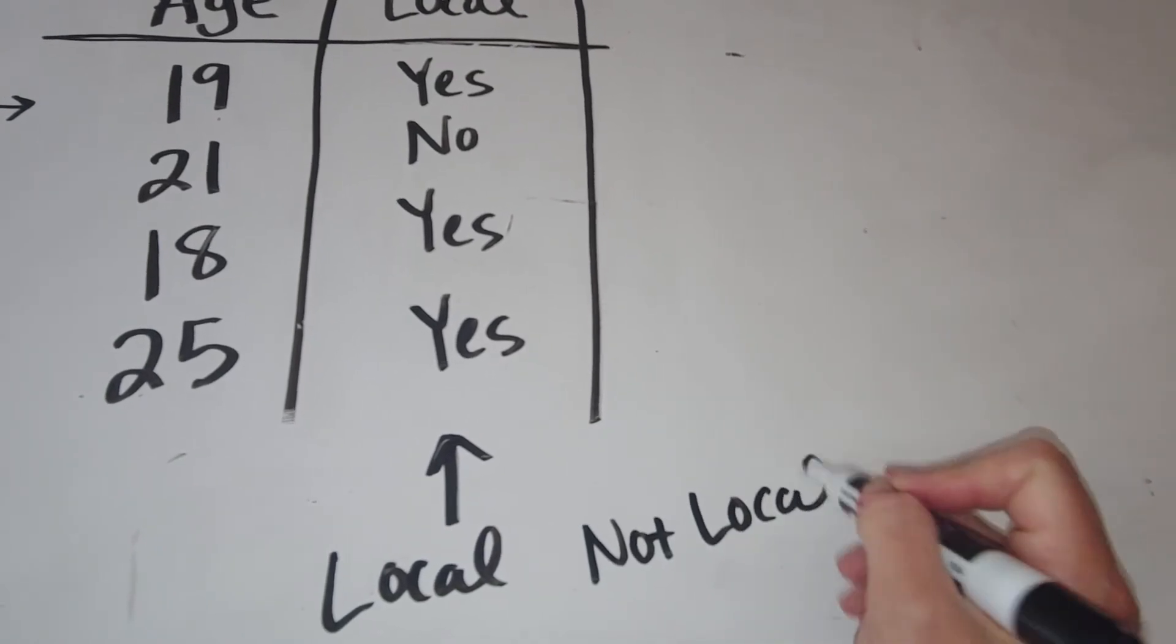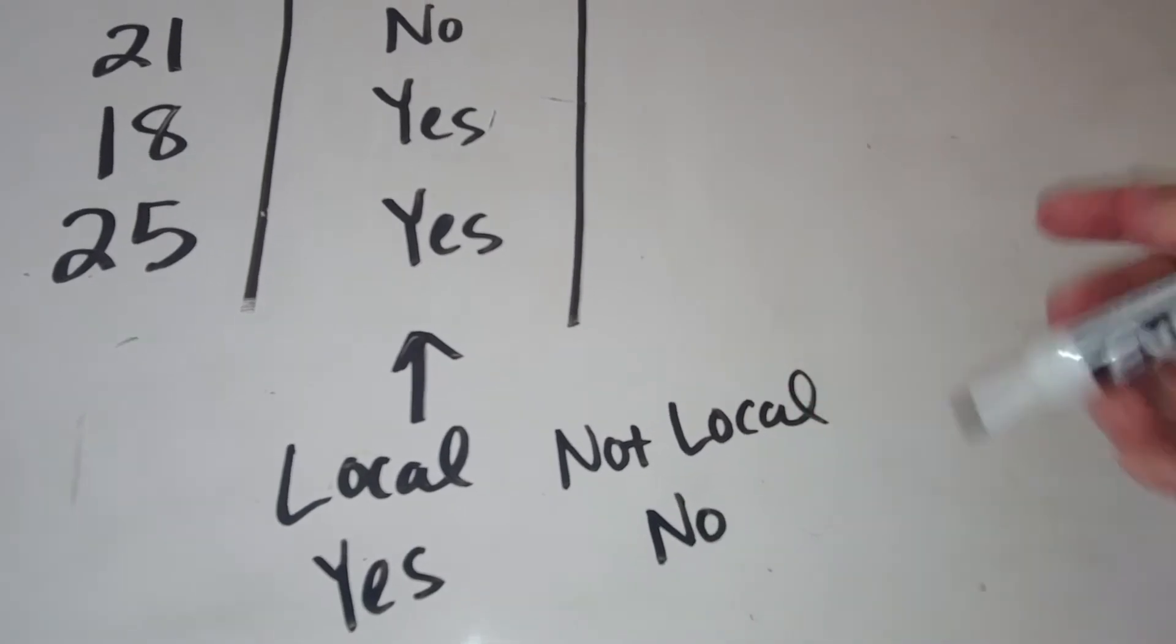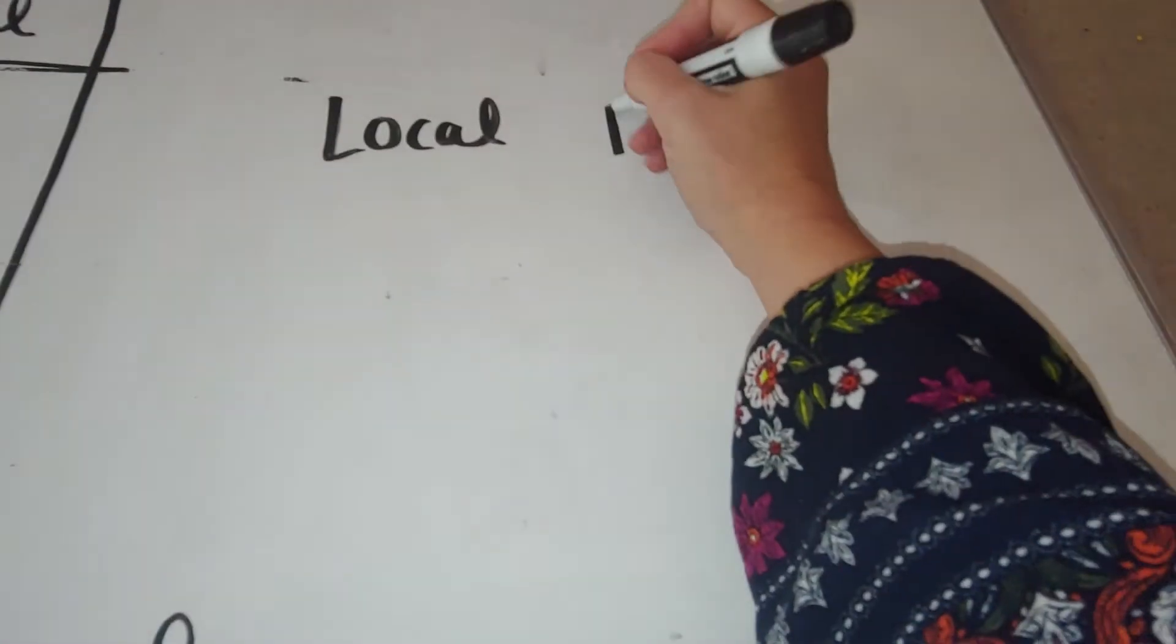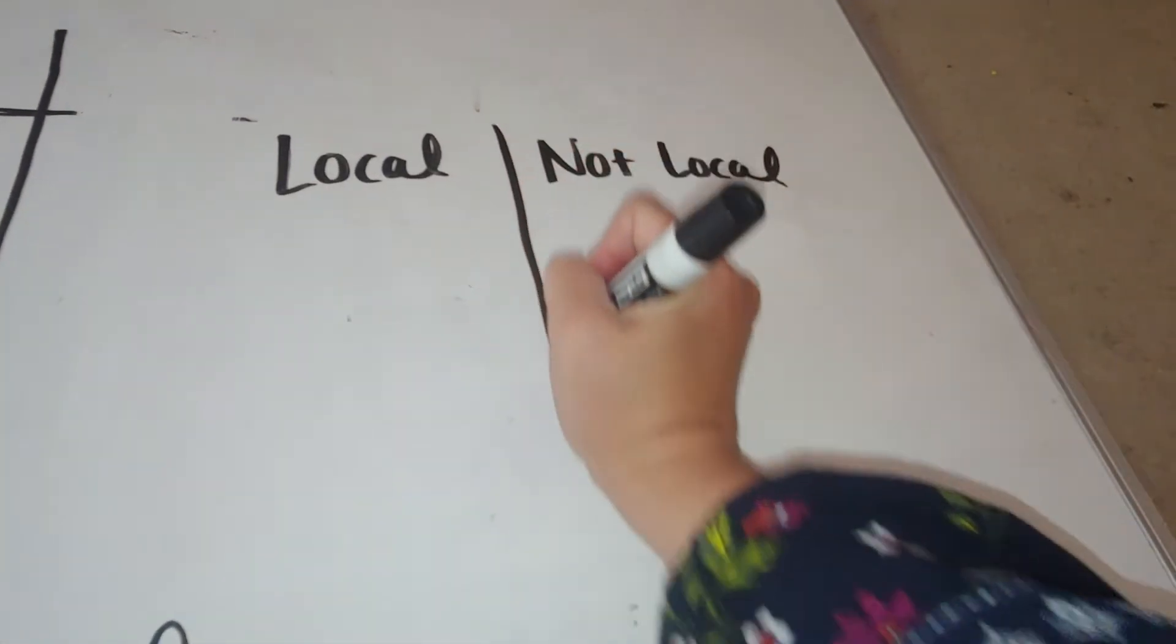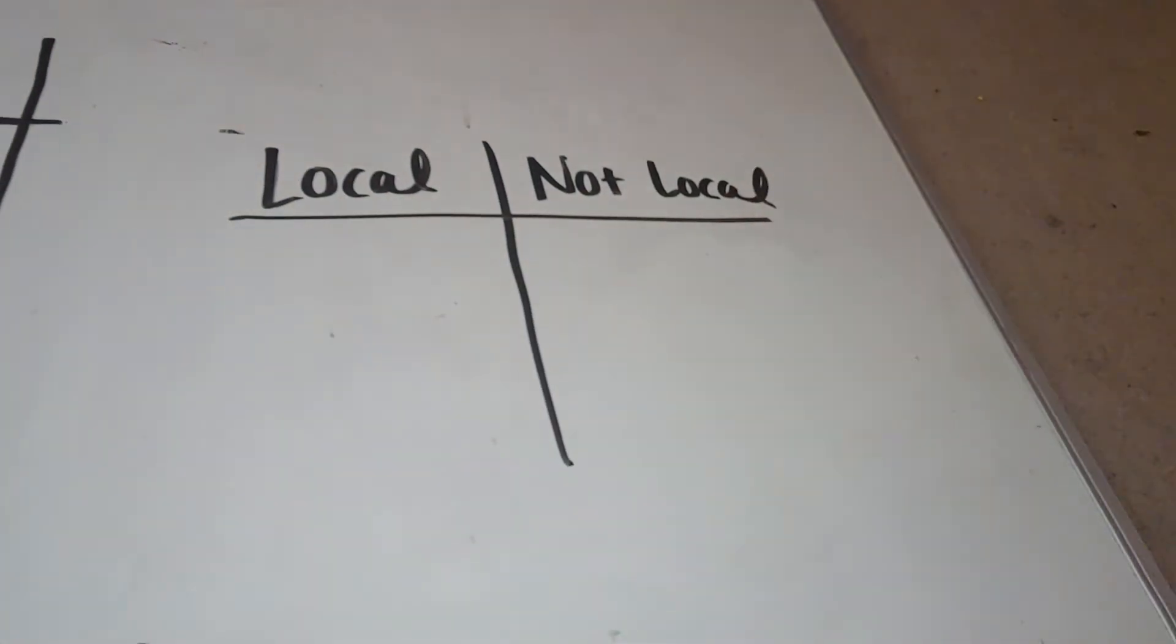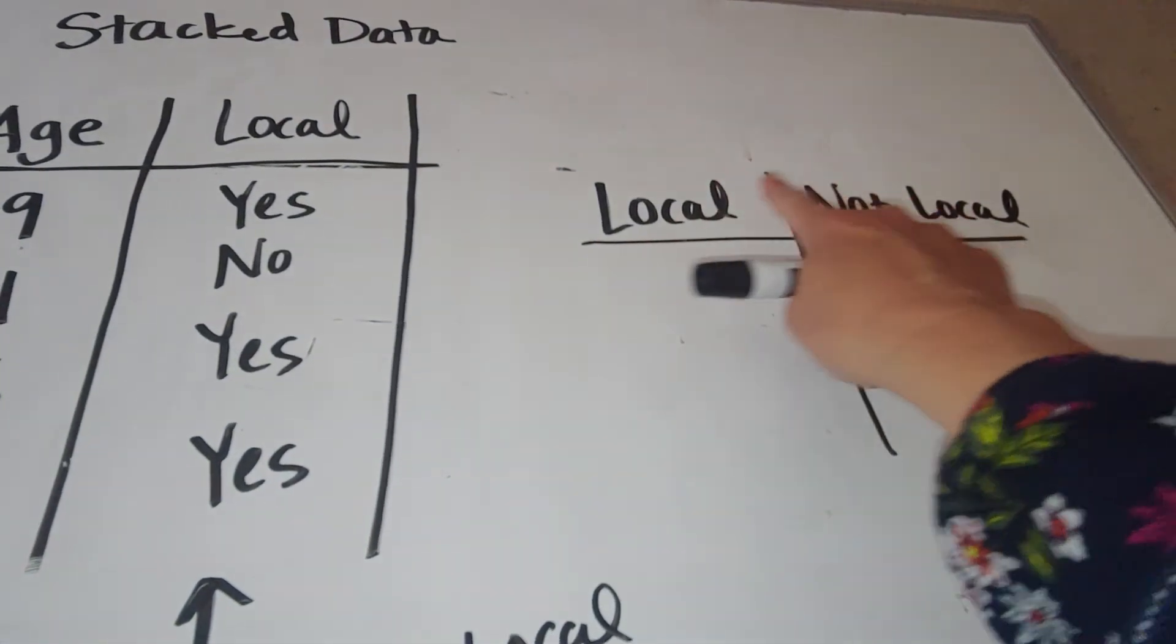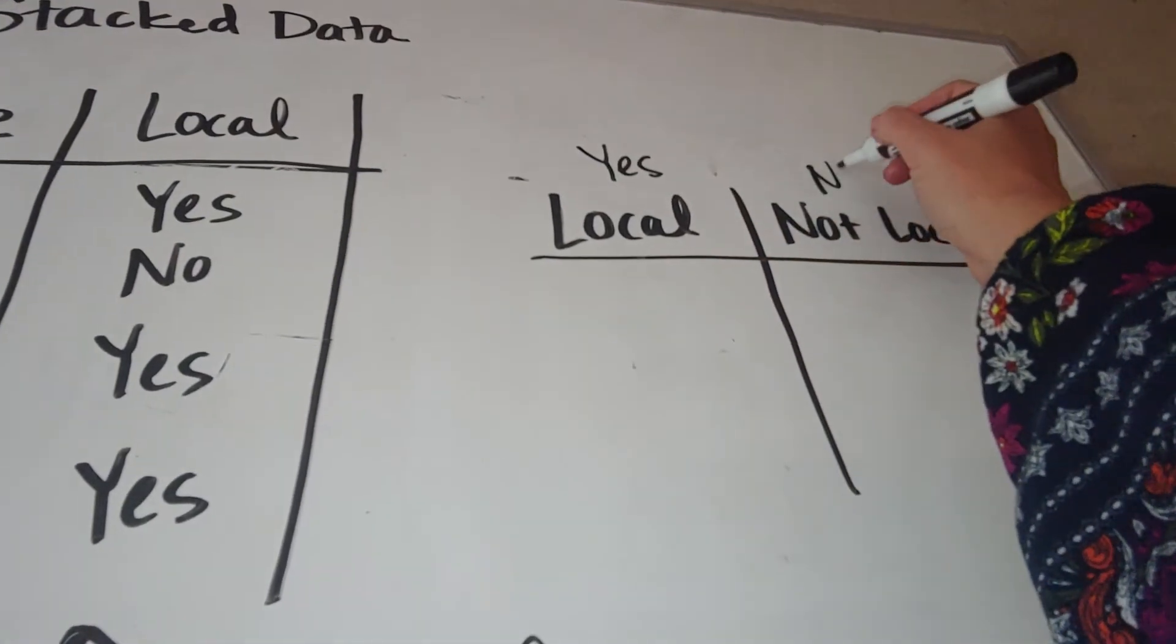So our two options are local and not local, or if you want, you could even title it yes and no. But the reason why I'm going to title it local and not local is because I think it'll be a little bit more telling when we go to do this. So how you unstack data is you take your categorical variable and split it into the two responses, which is local and not local, or yes and no if you'd prefer that.